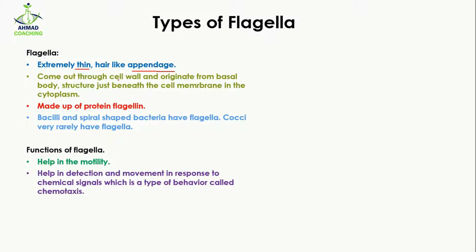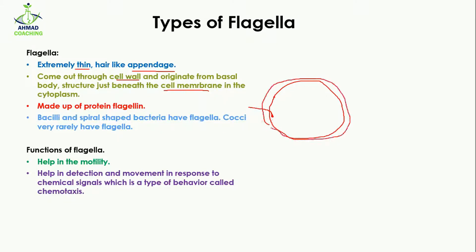Flagella come out through the cell wall and are originated from the basal body structure, which is present beneath the cell membrane in the cytoplasm. So from this basal body they originate, move from the cell membrane through the cell wall, and then protrude out of the cell.